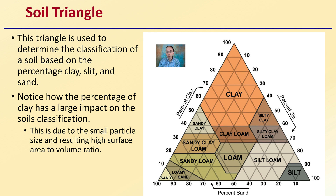You work the triangle by looking at the percentage of clay on one side, the percentage of silt, and the percentage of sand. For example, if you had 60% clay and 30% silt, you'd have only 10% sand — where those converge would be considered a clay soil. Alternatively, if you only had 10% clay and 20% sand, you would have 70% silt, which would classify as a silt loam.